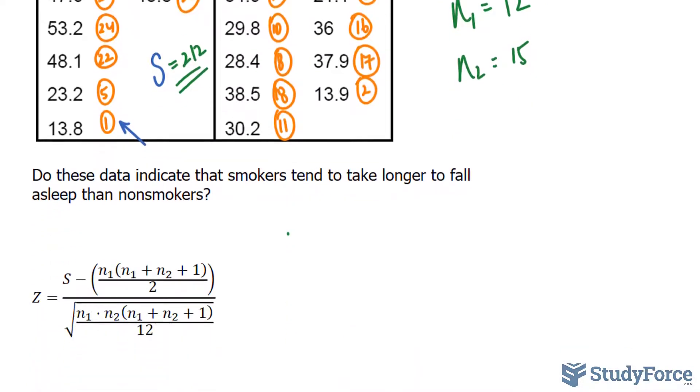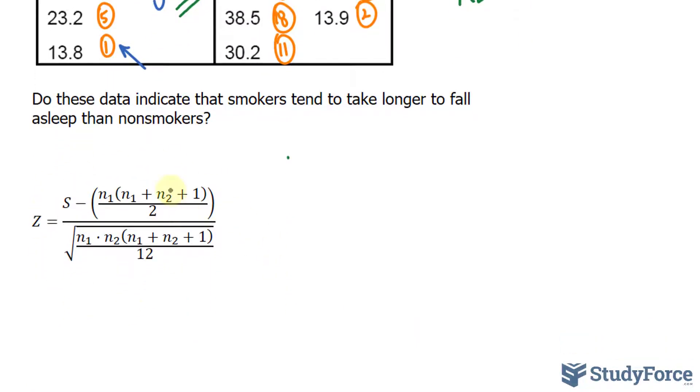That being said, the test statistic is calculated using this formula, and 212 will be substituted into there, along with n sub 1 being 12 and n sub 2 being 15. Those will be substituted also wherever we see those variables. If you calculate this correctly, you will end up with a Z value of 2.14698.